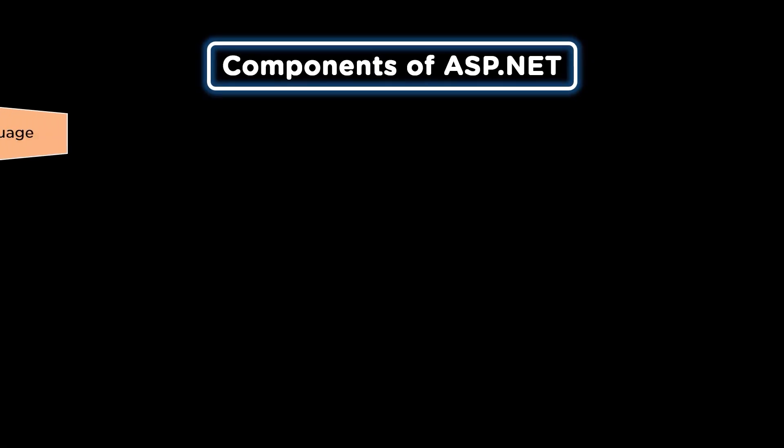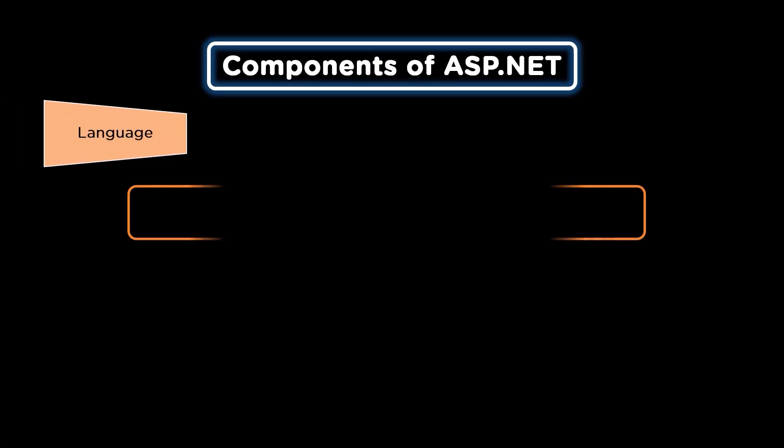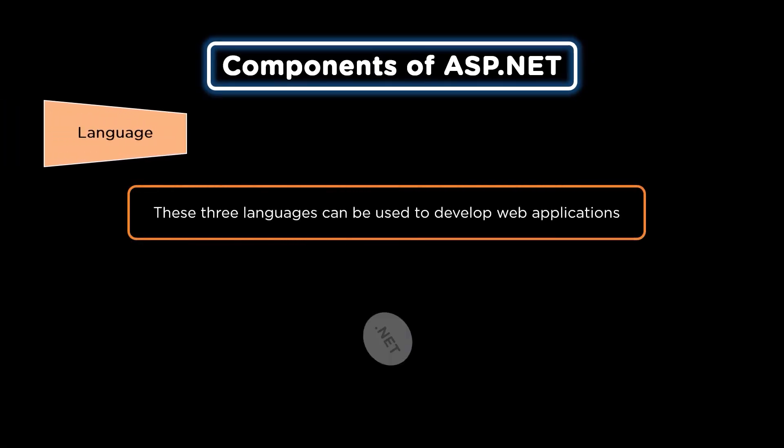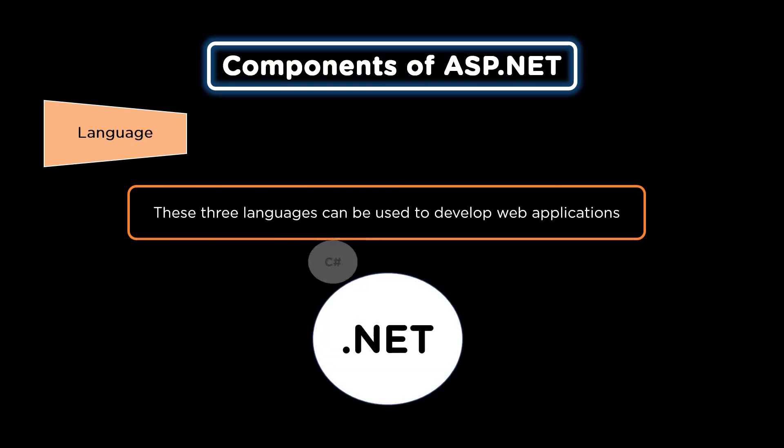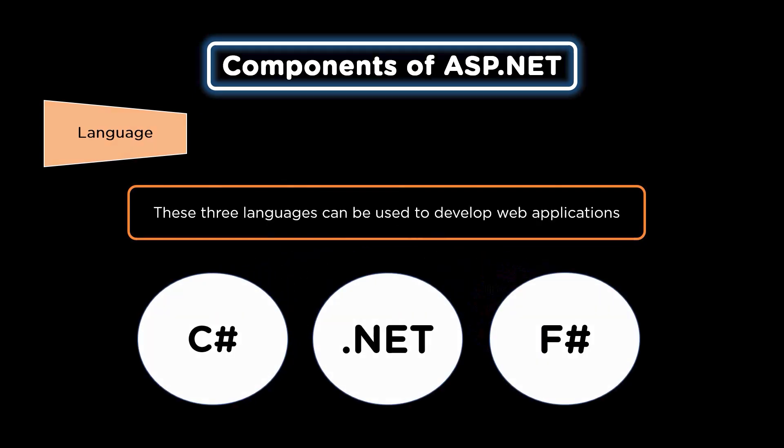The first component we have is Language. Whenever we build an application, the first task is to communicate with the application, which is made possible by different programming languages. The three major languages that ASP.NET uses to communicate with a computer are C#, VB.NET, and F#.